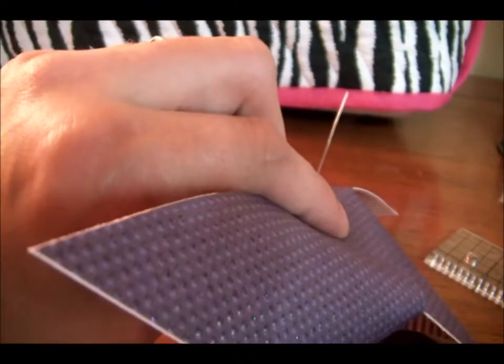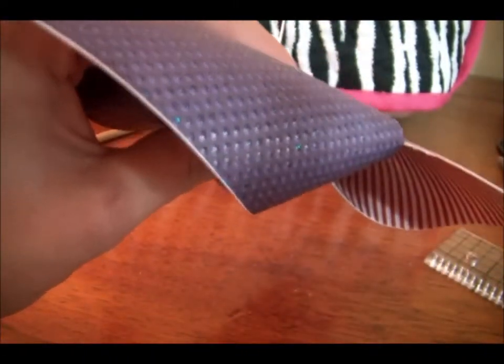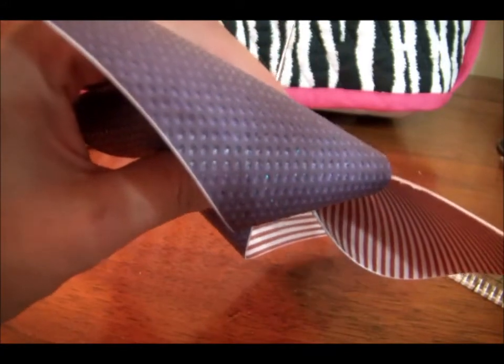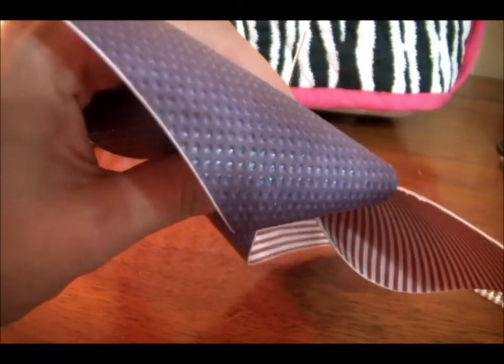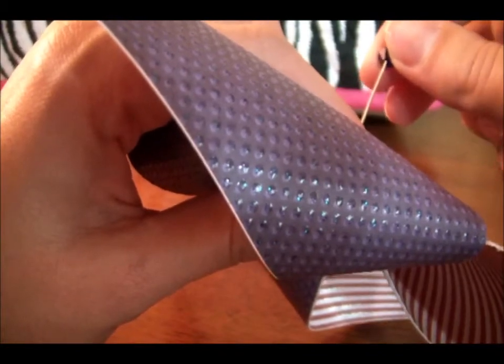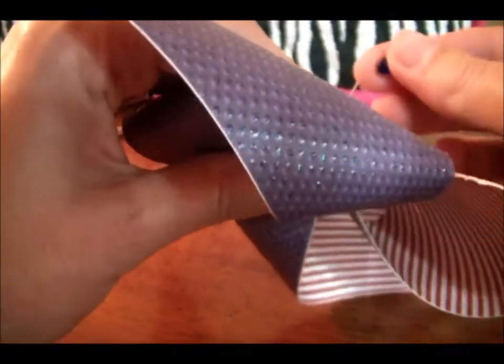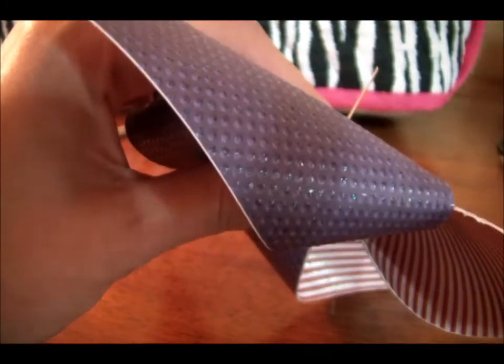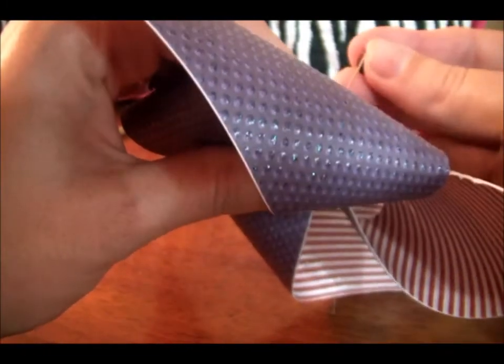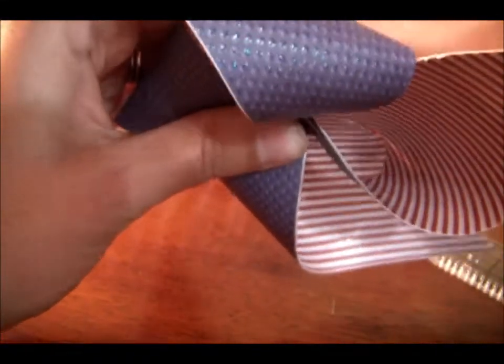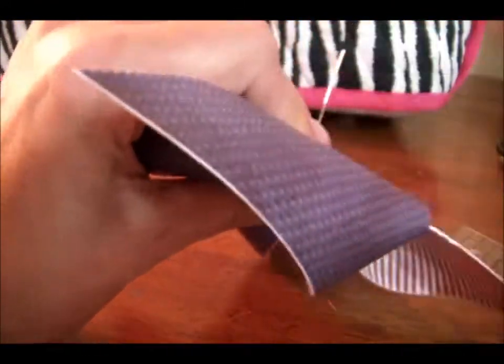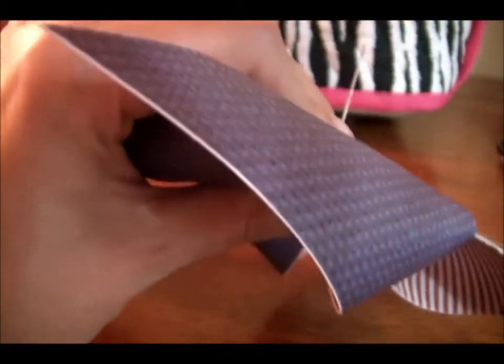Once we have that in there like that, we're going to add another bead. And I'm actually going to add two, so that it's not too close to the dowel, so it has free space to move. So there's one. And these are six millimeter. I don't know if that helps any of you who have jewelry making supplies at home. So once we've done that, now comes the dowel part.